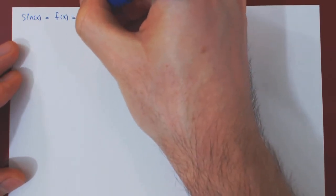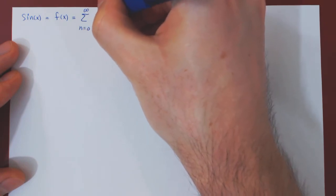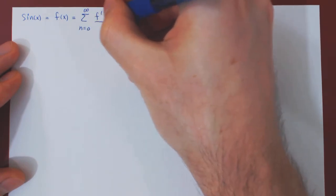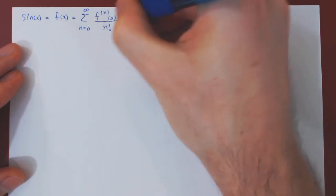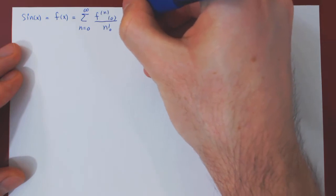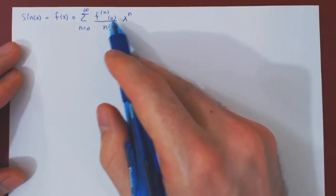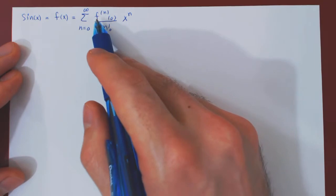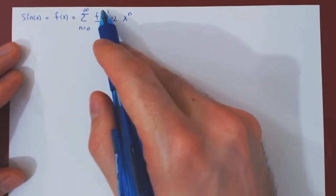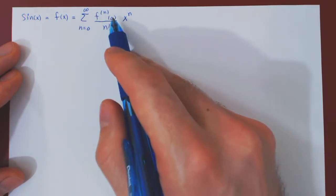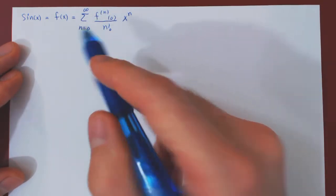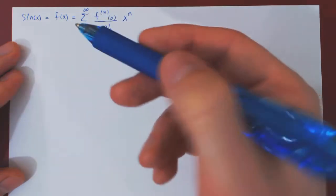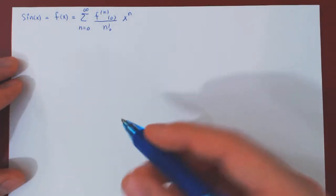The formula is the sum as n goes from 0 to infinity of the n-th derivative of f at 0, over n factorial, times x to the n. To find the Maclaurin series of a function, we first find the higher derivatives and then evaluate them at 0, hoping to see a pattern emerge.